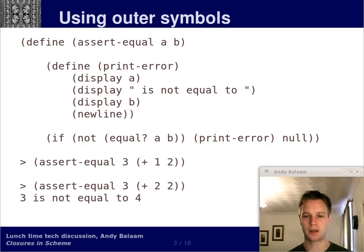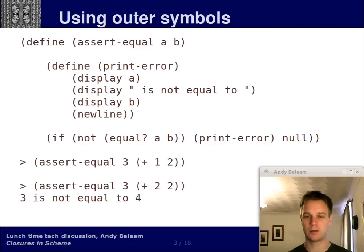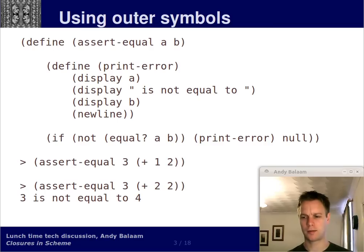So let's check this working. Lower down, you can see we're running assertEqual passing in an argument of three and another argument which is plus one two. As we know, one plus two does equal three, so when you run that, assertEqual does nothing. And when you run assertEqual three plus two two — which means three equals four — then assertEqual complains and says three is not equal to four. So this function works — that's what it's supposed to do.